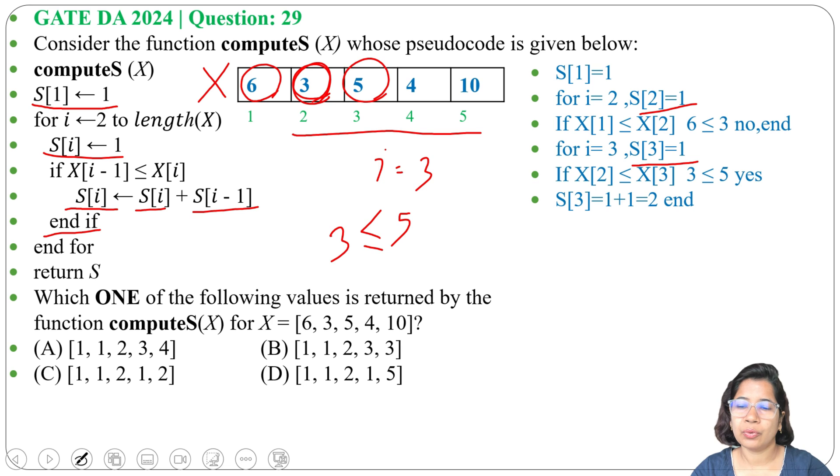And we'll do the end if, return S. So S[1] = 1, S[2] = 1, and S[3] we got 2.